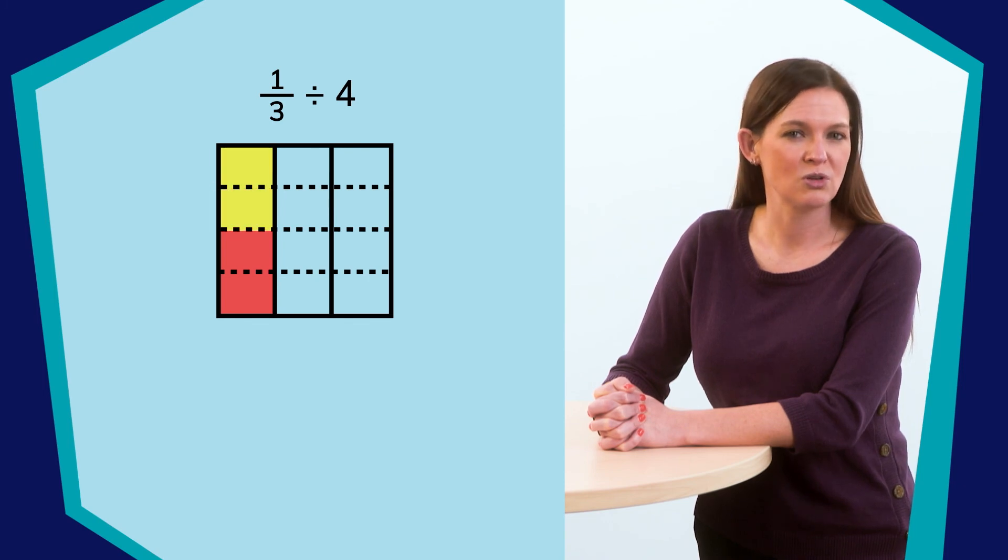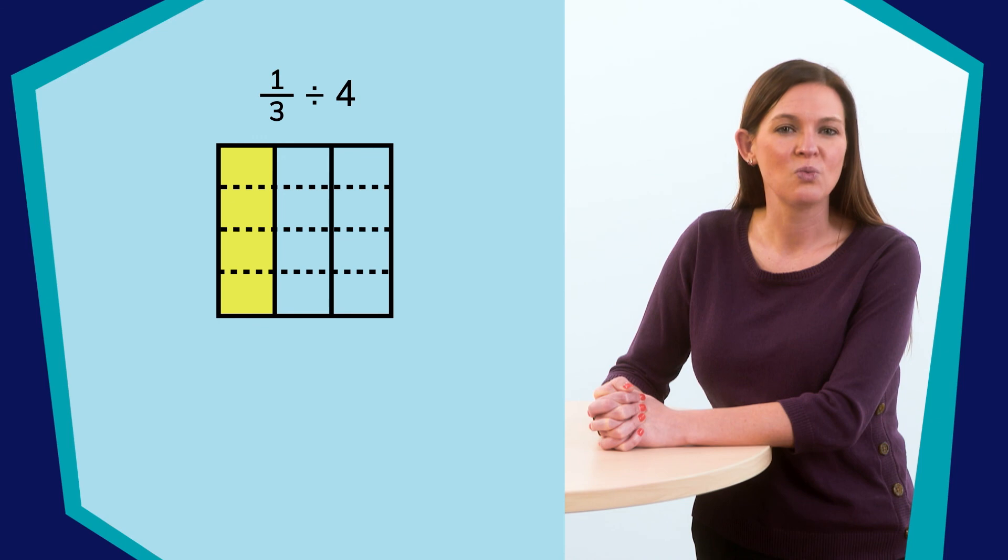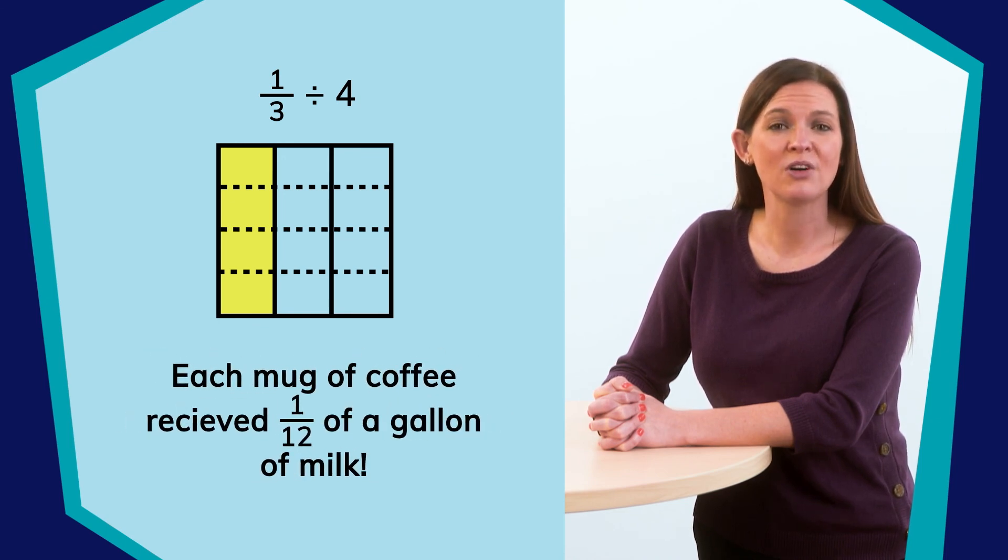Here is one group, two groups, three groups, and four groups. What is the value of one group? Yes, one-twelfth. So each mug of coffee received one-twelfth of a gallon of milk.